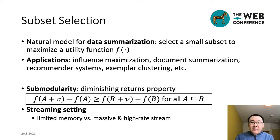Subset selection is a natural model for data summarization. For a given dataset and a utility function f to measure the representativeness of a subset, its goal is to select a subset to maximize the utility function f. This model has been widely used in many real-world applications, including influence maximization, document summarization, recommended systems, and exemplar clustering.